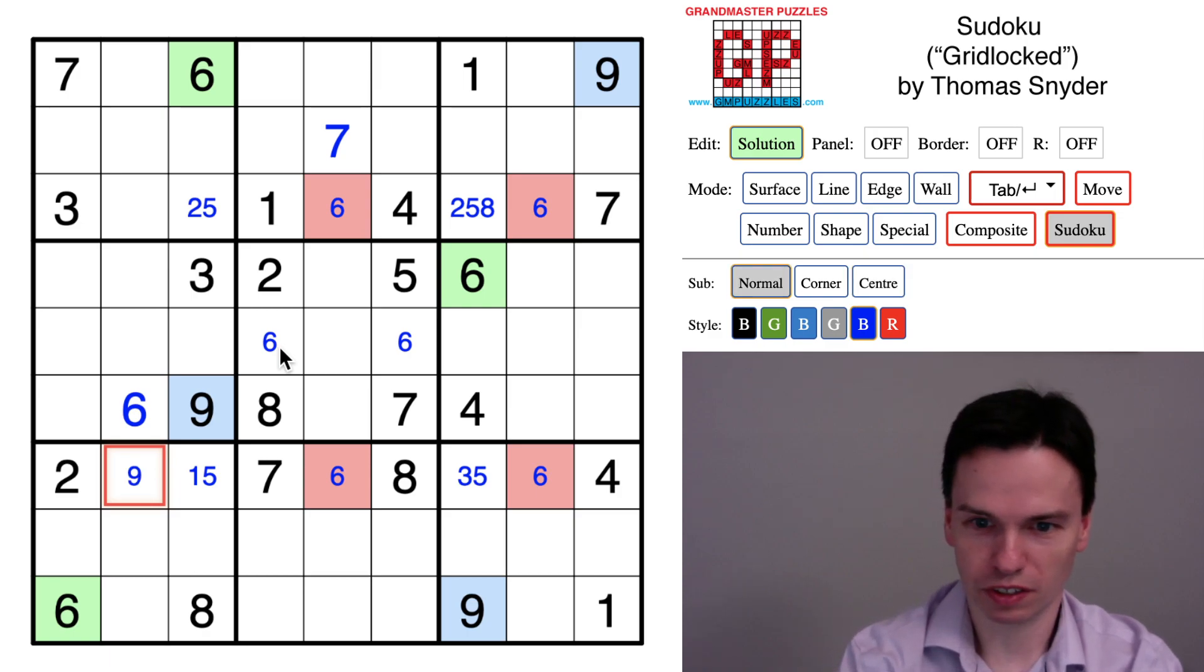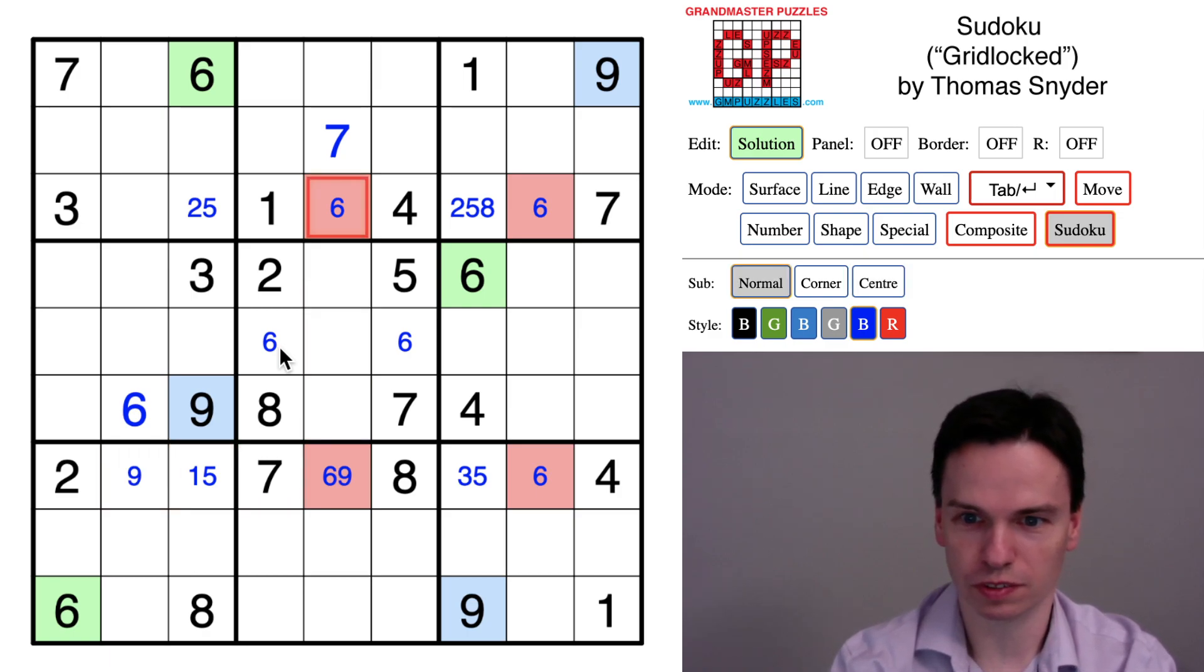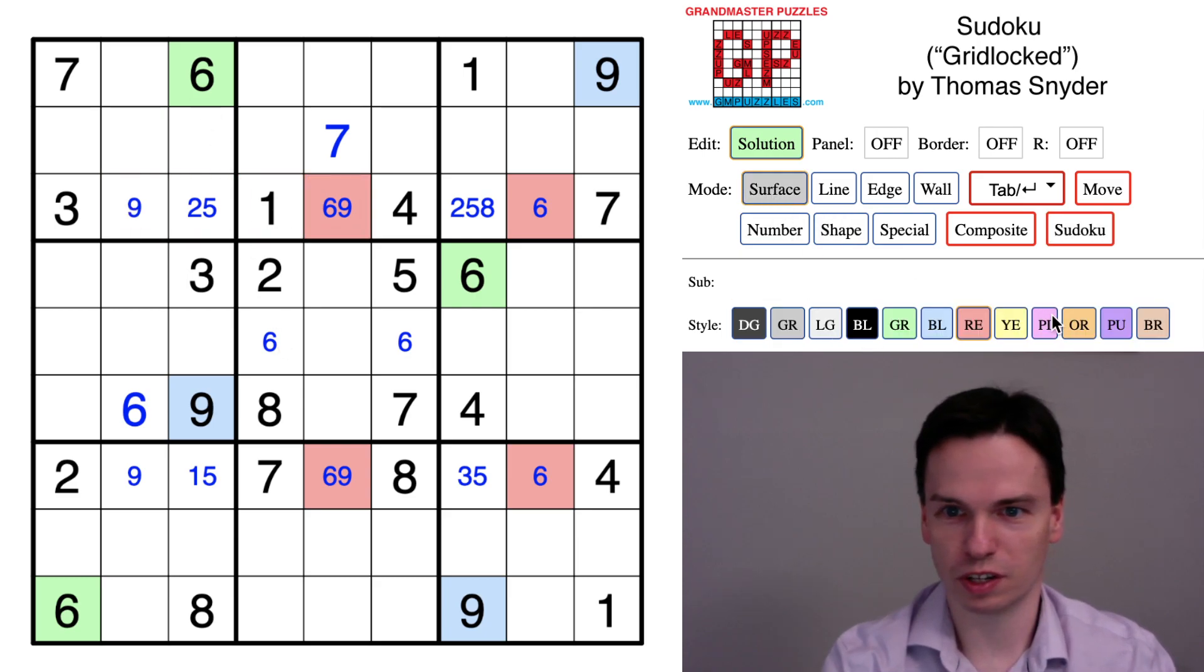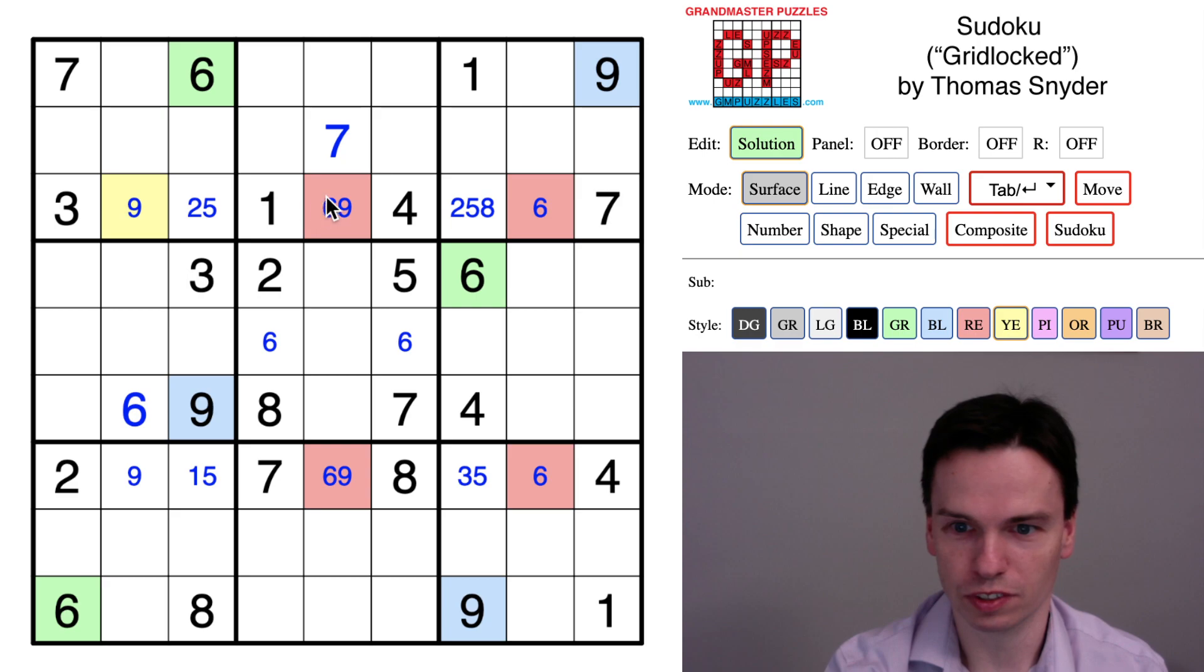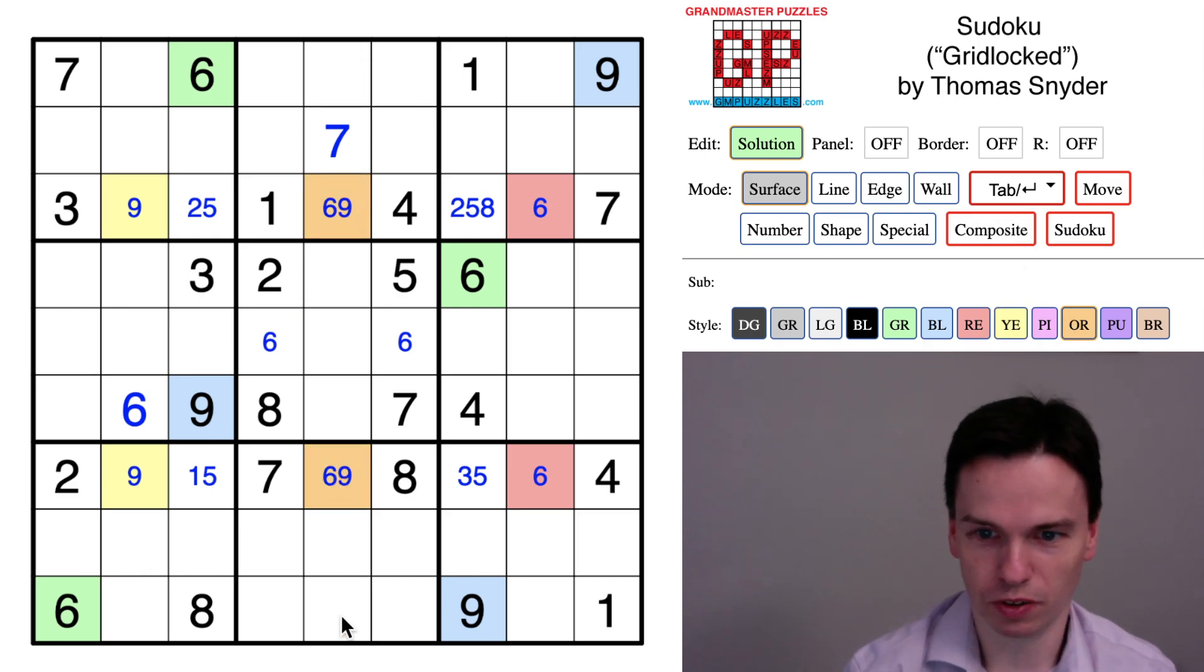The other parallel thing to observe, though, is there's an X-wing also on the nines. It's in columns two and five as opposed to columns five and eight. So in these cells we're going to get a nine in the left or right, and on the bottom a nine in the left or right, and again nine can't be in cells like this, it can't be in cells like this.